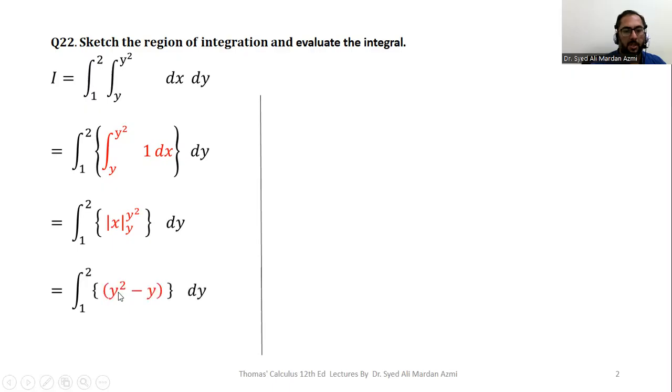Upper limit minus lower limit. For this purpose, we will replace x with y squared minus x with y. So, when we have y squared minus y, it means we have solved our inner integral. Now, we can integrate this y squared minus y with respect to y for the outer integral.